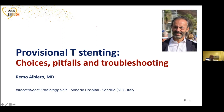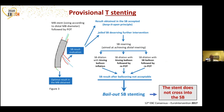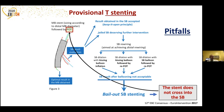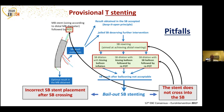In the flowchart of provisional stenting, when the side branch result after ballooning is not acceptable, a bailout side branch stenting is required. What can happen first during side branch stent implantation is that the stent does not cross into the side branch. This can be related to one or more pitfalls at one or more prior steps. The other scenario is an incorrect side branch stent placement after crossing into the side branch.